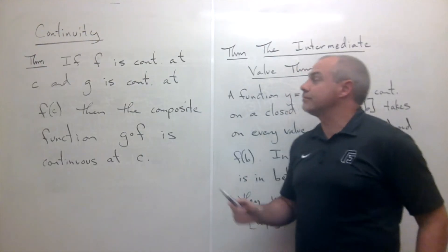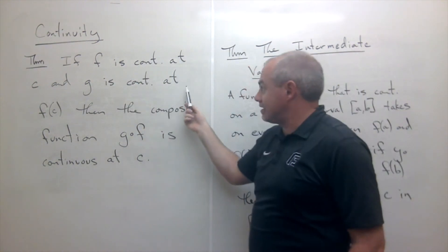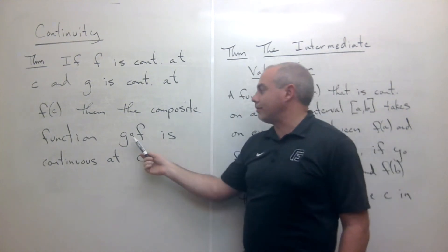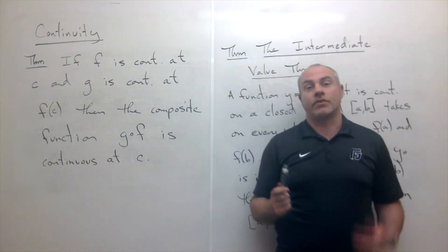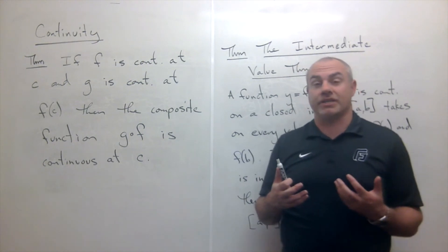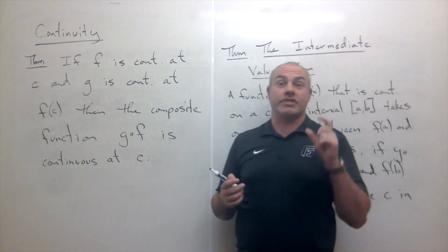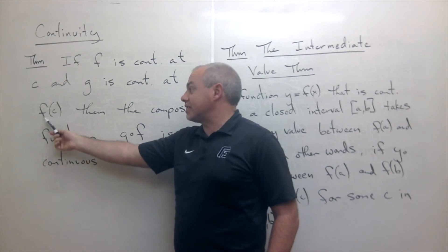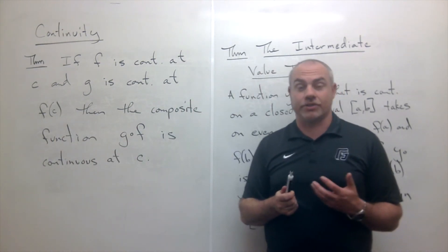Our next theorem states that if f is continuous at c and g is continuous at f of c, then the composite function g composed with f is continuous at c. So we can talk about the composition of two functions being continuous, as long as f is continuous at c and g is continuous at f of c.